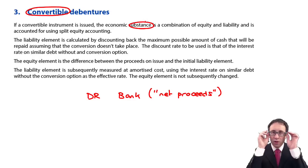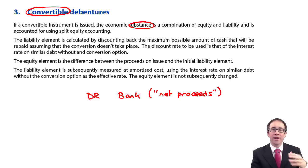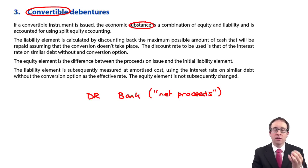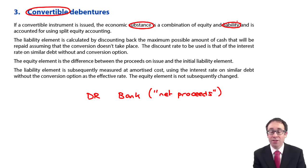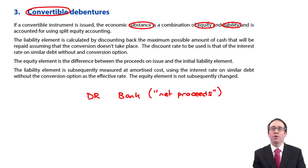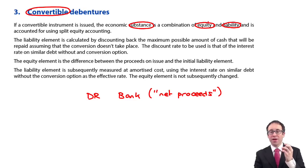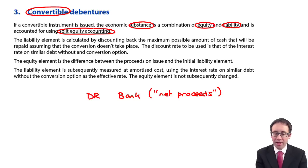We want to look at the substance. The substance is that there is definitely a liability in this because there is an obligation to pay cash. But there is also the potential for equity at some point in the future. So we're going to account for both of them using a process known as split equity accounting.